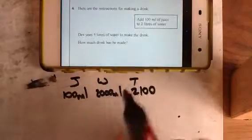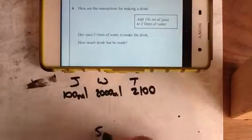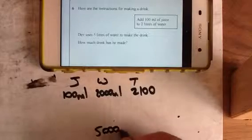Now this is for 2 litres. Now what we really need, we need 5 litres, which is 5000 milliliters.